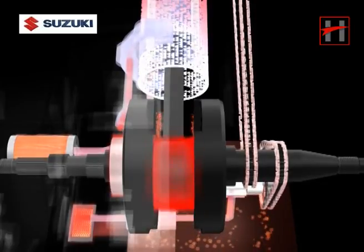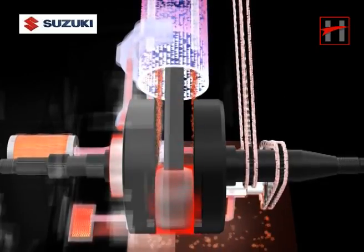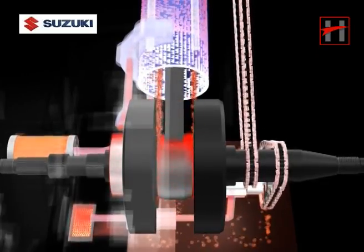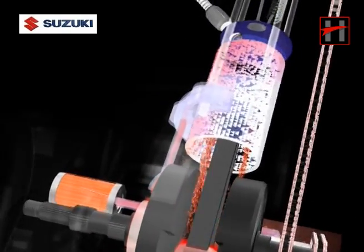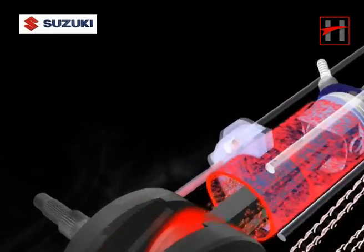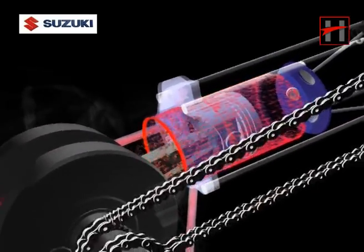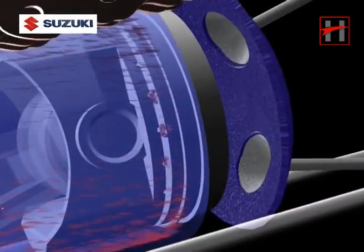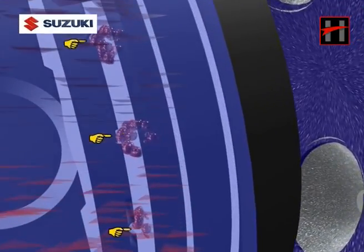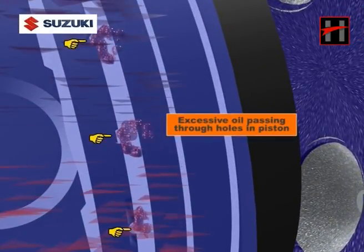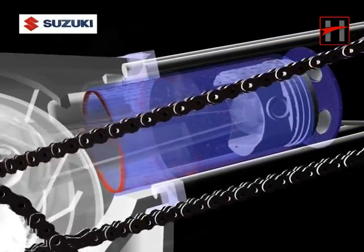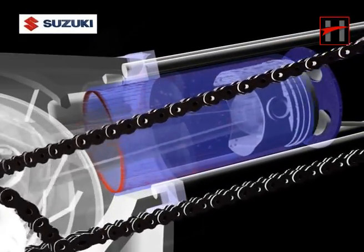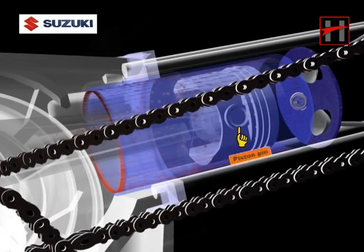Oil from the big end pin is sprayed out to the piston and the cylinder wall. The excessive oil passes through holes given in the piston and lubricates the piston pin.